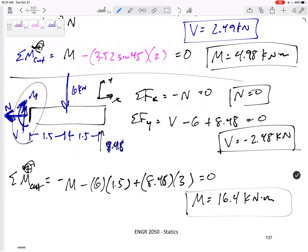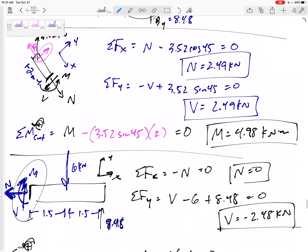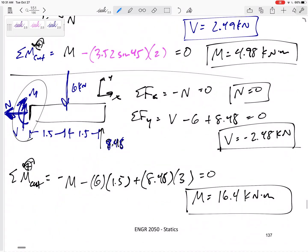So that is the internal moment at, you know, if we were to cut it at point D. This is D. That was the internal moment at C.